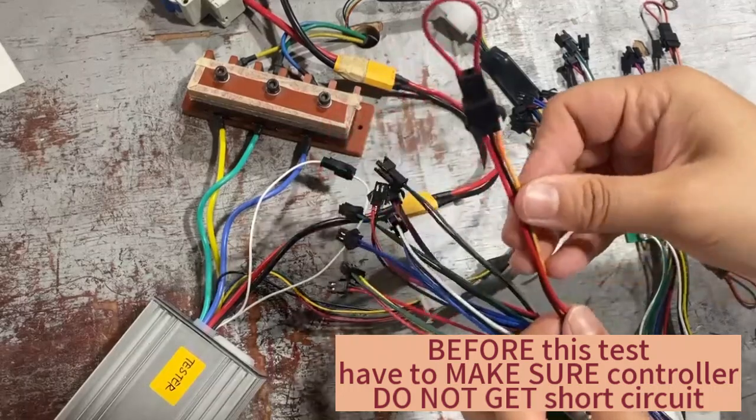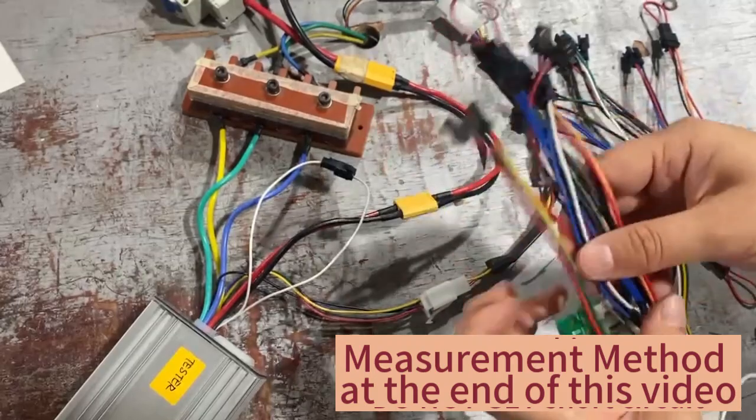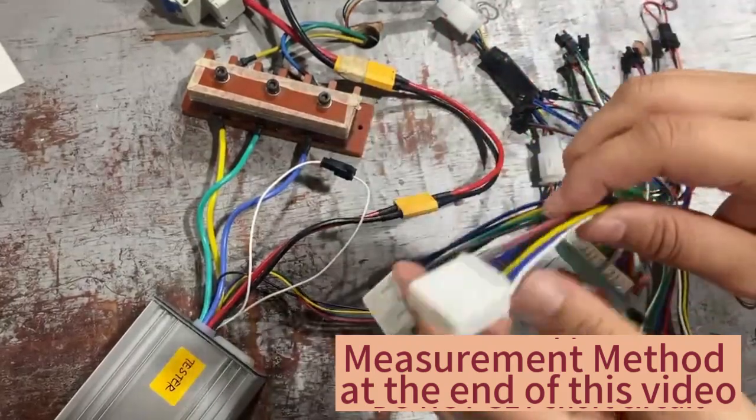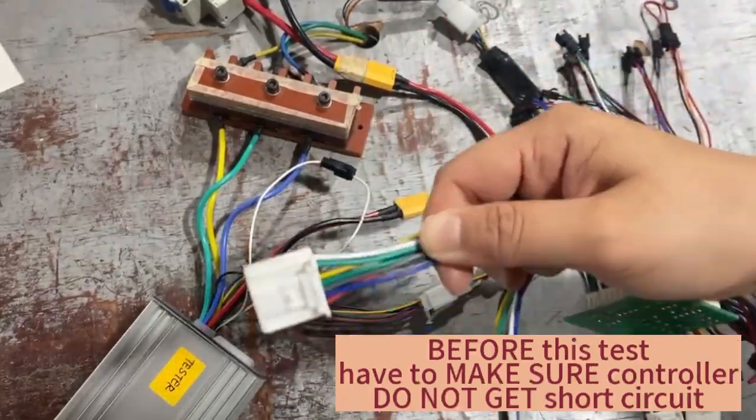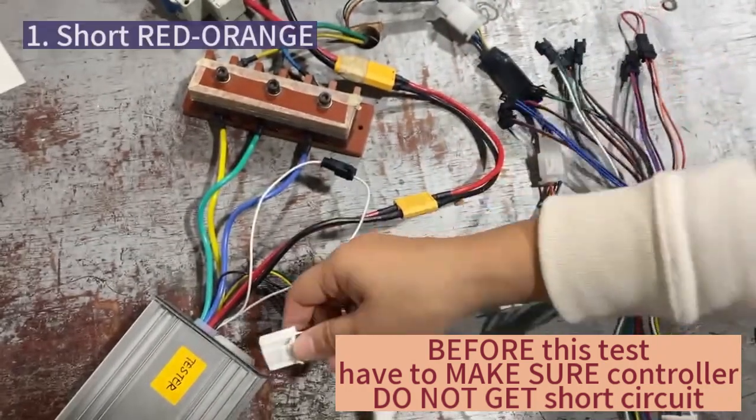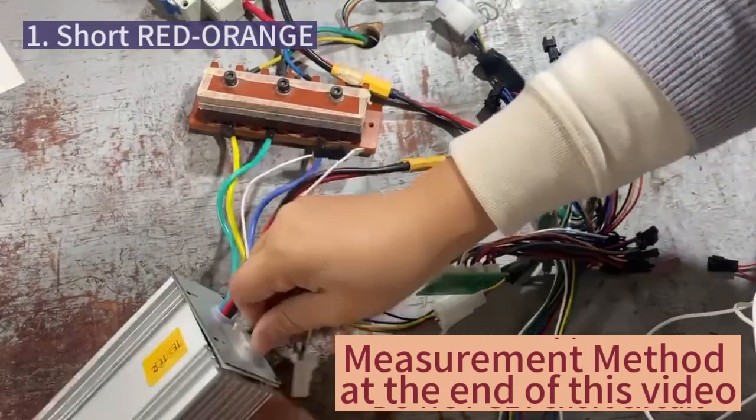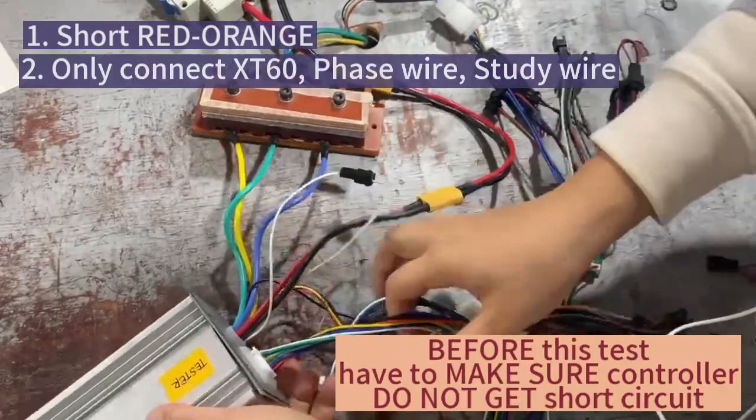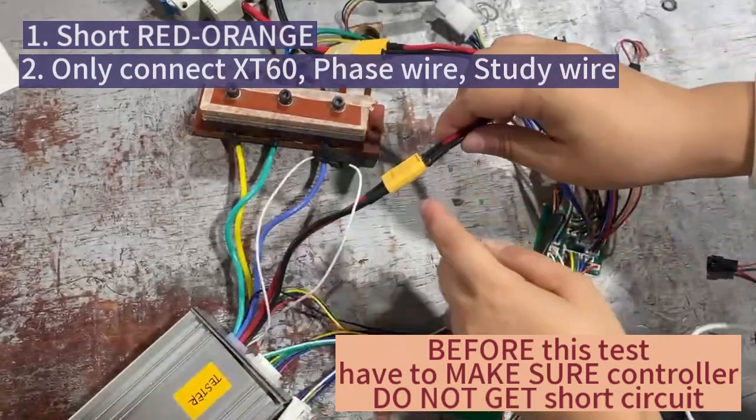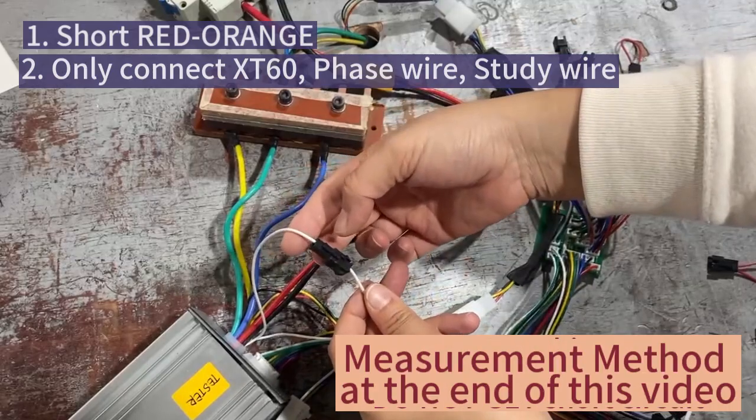Short the orange and the red here and connect to the controller with this white plug. Then connect here and connect the power and connect the study wire.